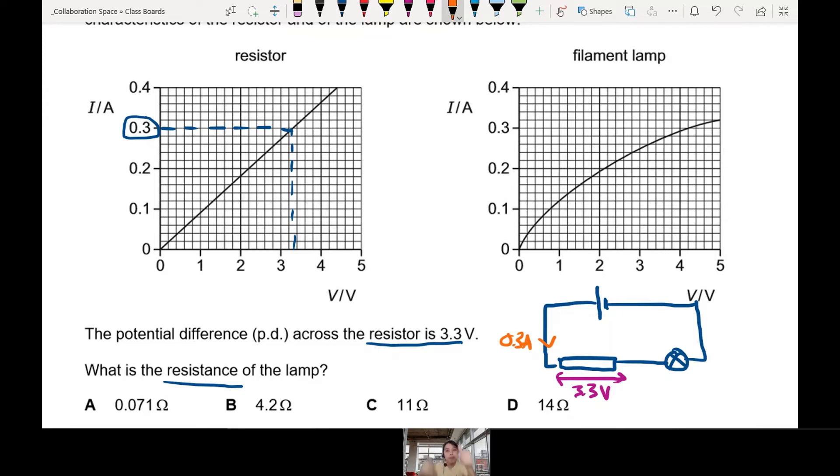But this current is the same value that is going to flow through the filament lamp also, because there are only one loop. The current didn't split here or split there. So now I have to check part two. 0.3A, they have the same current.